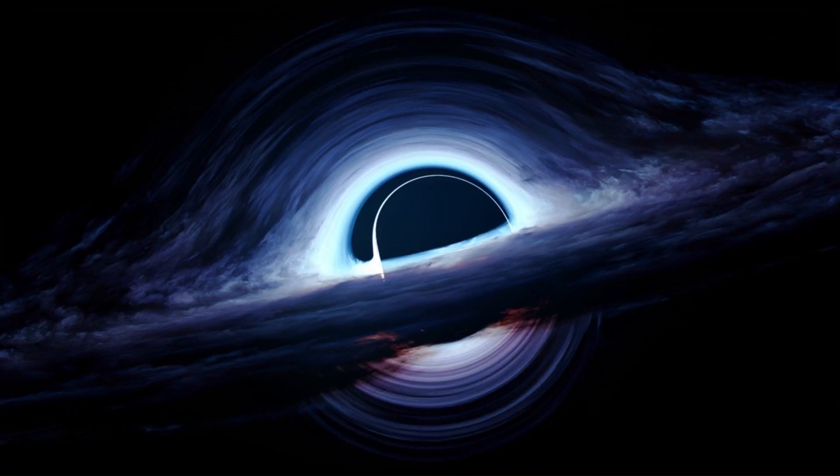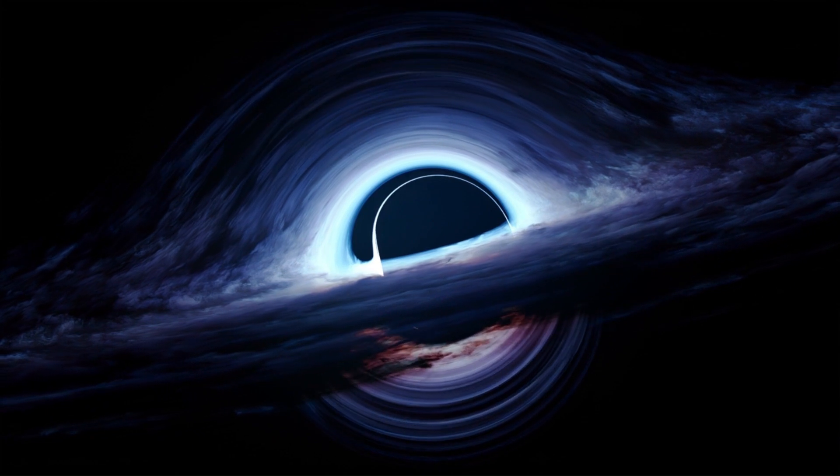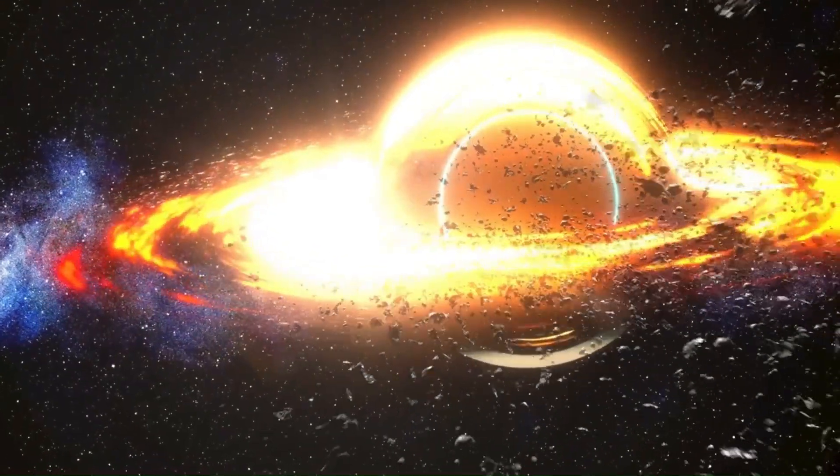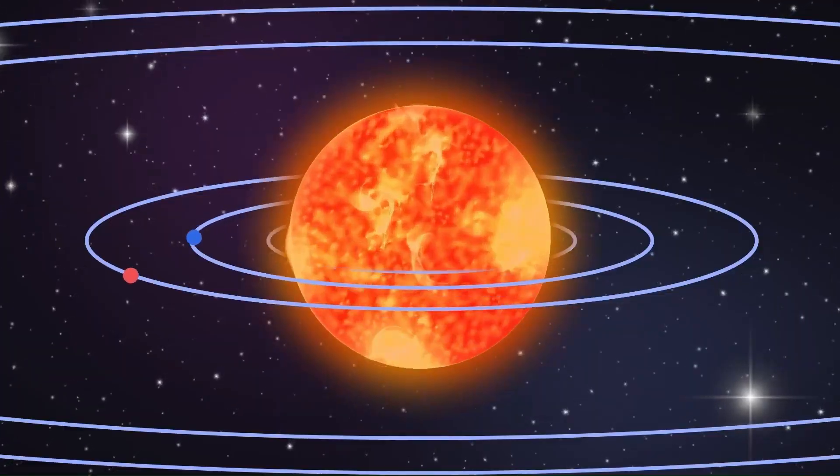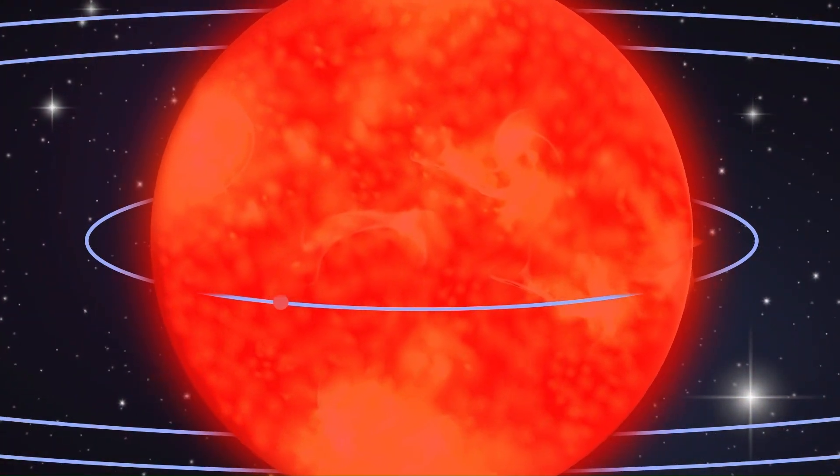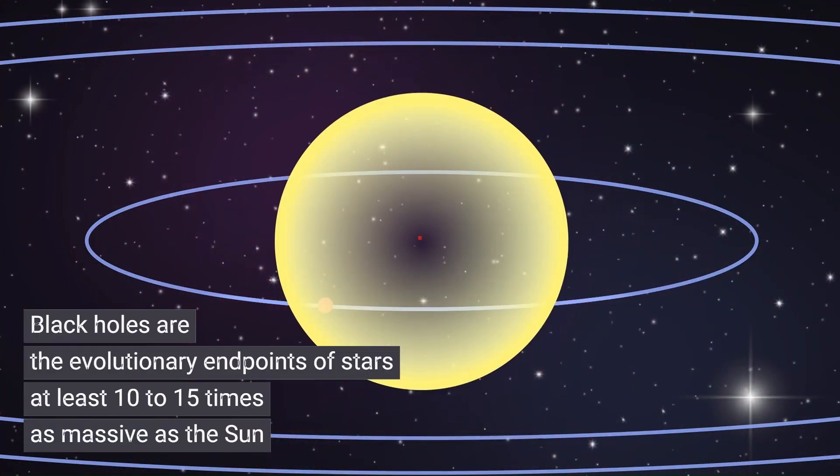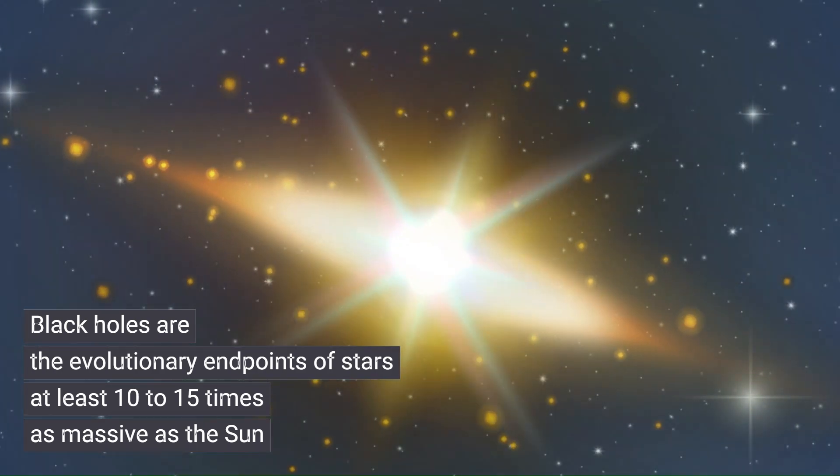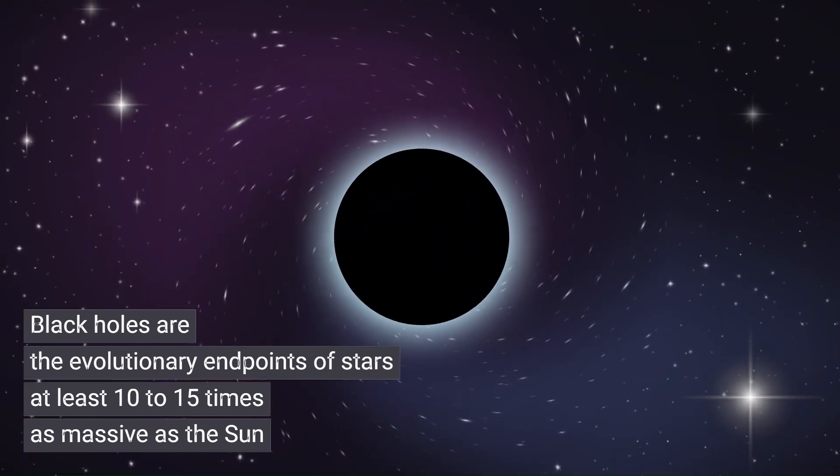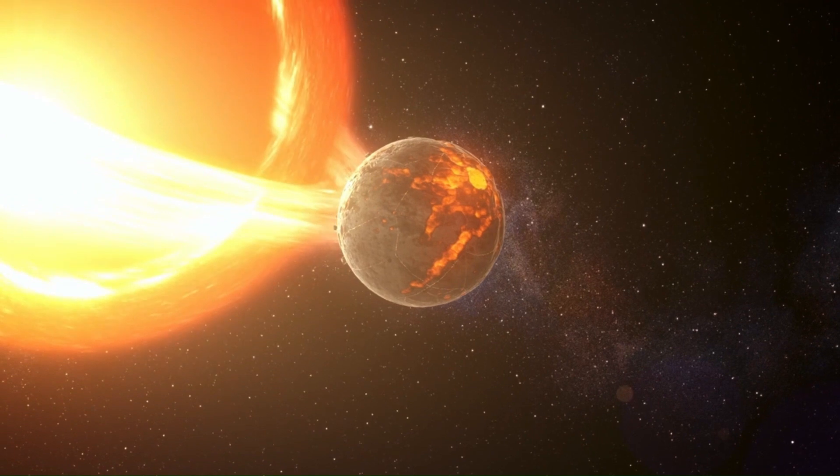Could Earth orbit the Sun and a black hole? Black holes' gravity is so strong that nothing, not even light, can escape their pull. They are born from the remnants of massive stars that collapse in on themselves, creating a gravitational field so intense that it warps the fabric of space and time.